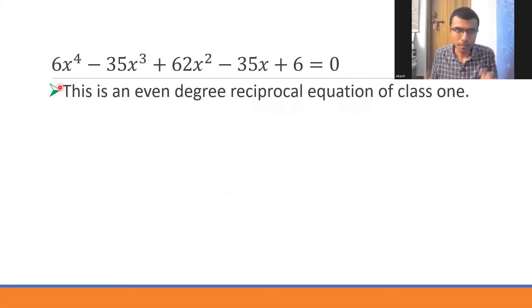Reciprocal equation: if you observe, the coefficient of x⁴ is equal to the constant. The coefficient of x³ is equal to the coefficient of x. So in that sense, this is a reciprocal equation. Since this criteria has matched, this is a reciprocal equation. I'm not going to enter the exact definition.